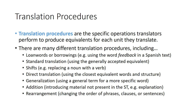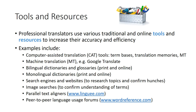More translation procedures include: generalization, using a more general term for a more specific word — for example, writing 'SUV' instead of a specific make and model; addition, where the translator inserts material not present in the source text, such as adding a few words to explain a culturally specific reference to target language readers; and rearrangement, changing the order of phrases, clauses, or sentences to make the target text clearer. These are examples of procedures translators apply when resolving individual translation problems.